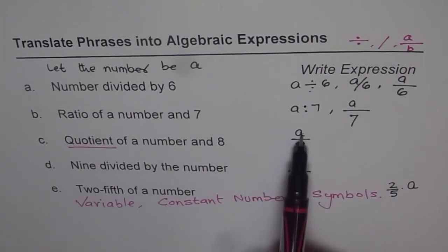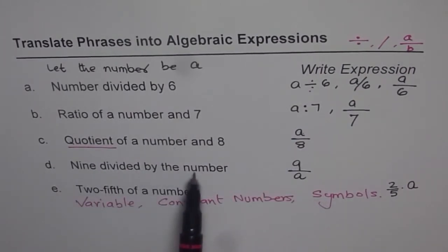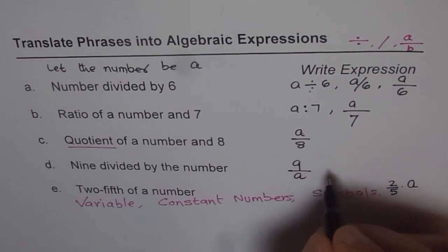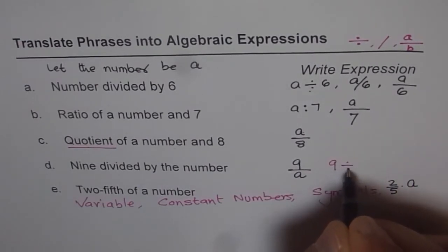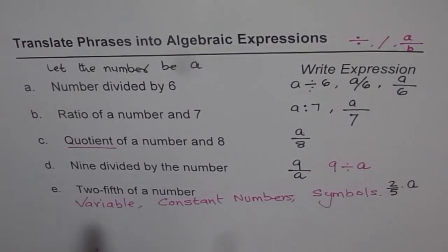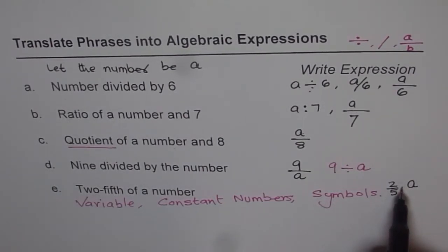9 divided by a number. That is very clear. You could also write this as 9 divided by a number a. Two-fifth of a number. 2 over 5 means two-fifth of a number means times a. So that is how we can translate such phrases into algebraic expressions.